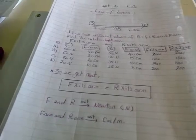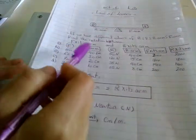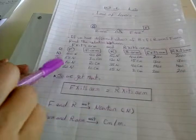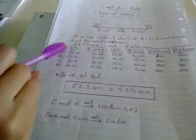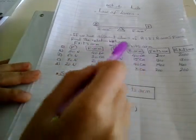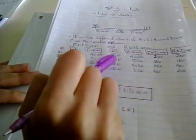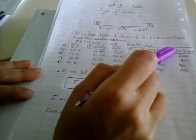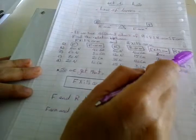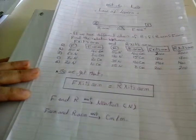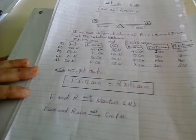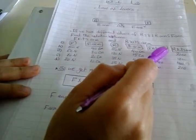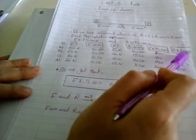To deduce this law, we can get different values for effort force and force arm, resistance and resistance arm. We multiply force by its arm, and resistance by its arm, and study the relation between those two products.